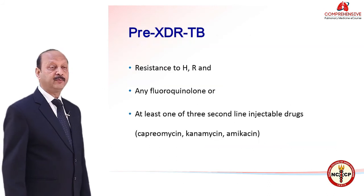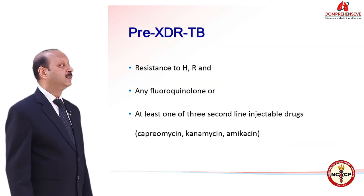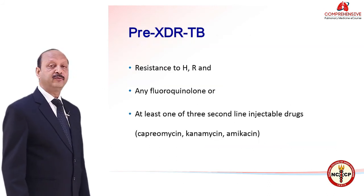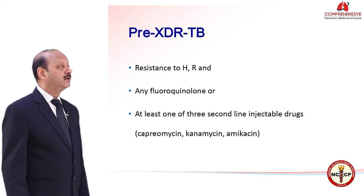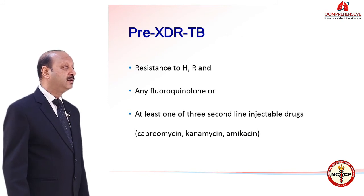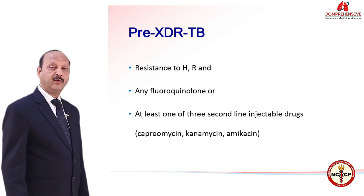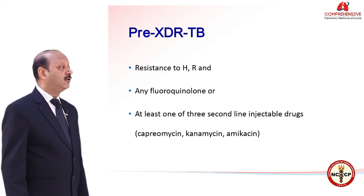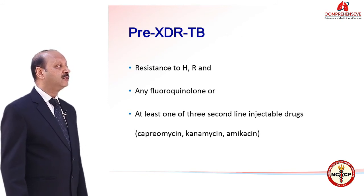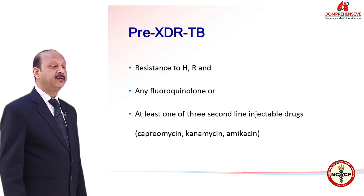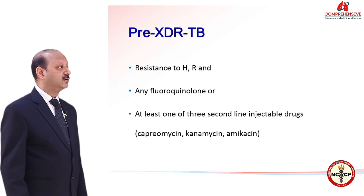Pre-XDR tuberculosis includes resistance to INH and rifampicin, and either any of the fluoroquinolones or at least one of the 3 second-line injectables — capreomycin, kanamycin, or amikacin.